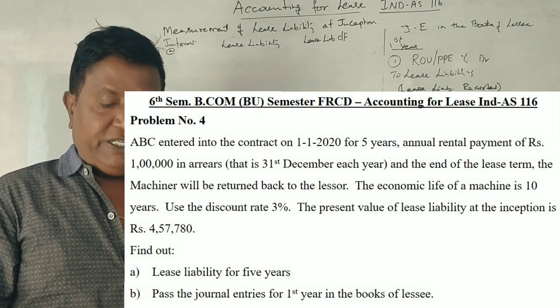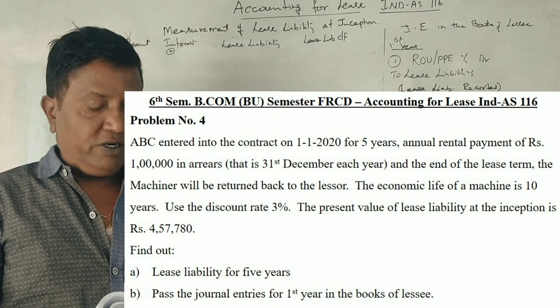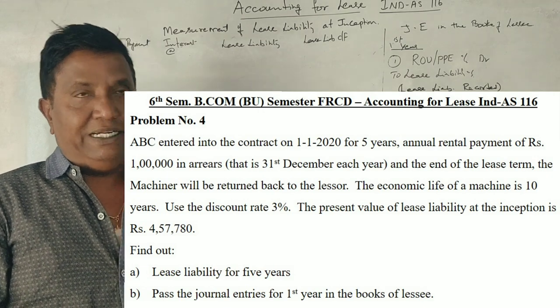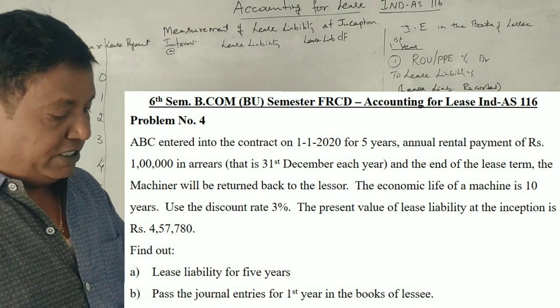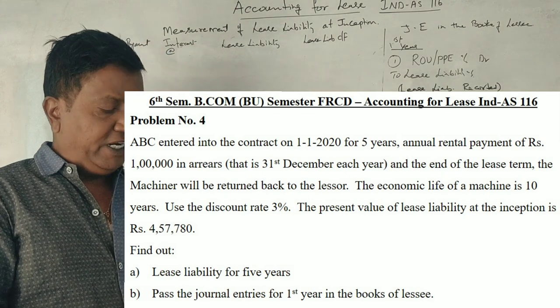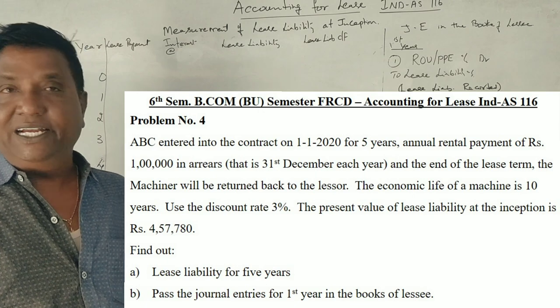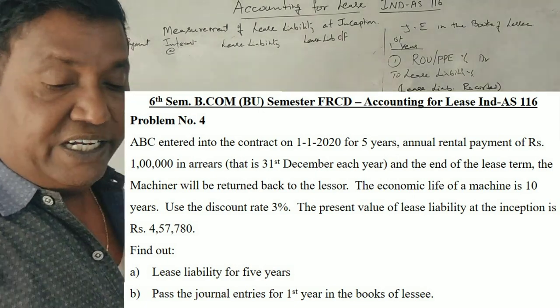The economic life of the machine is 10 years. Use the discount rate 3% and the present value of the lease liability is 4,57,971. Find out lease liability for 5 years, and pass journal entries for 1st year.